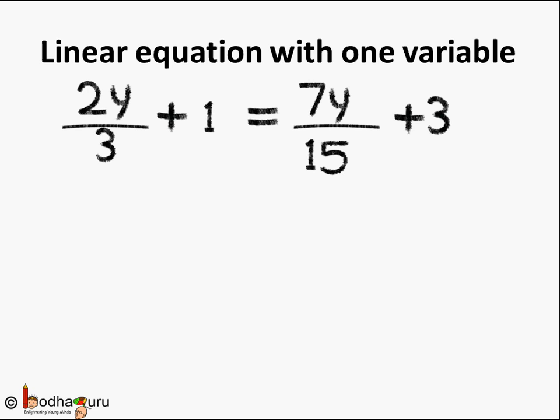2y by 3 plus 1 is equal to 7y by 15 plus 3. Or we can also say 2 by 3y plus 1 is equal to 7 by 15y plus 3. It is the same thing. So this has variable on both the sides.